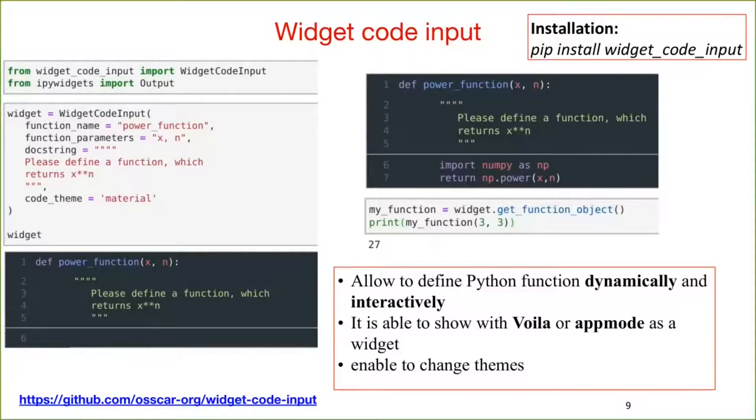The my underscore function becomes the defined power function. When the function changes, you can call the get underscore function underscore object to update it. In our web apps, all the code cells will not show in the web page. But this code input widget can be shown in the web as a widget.